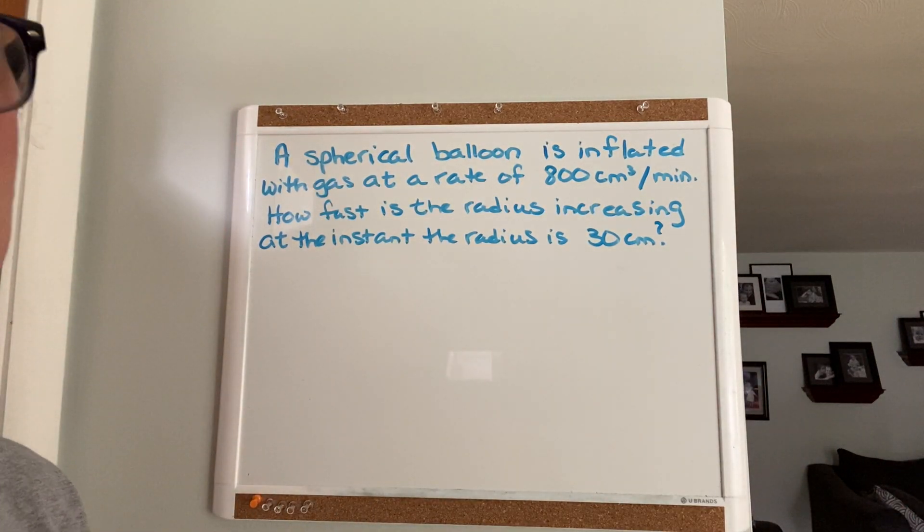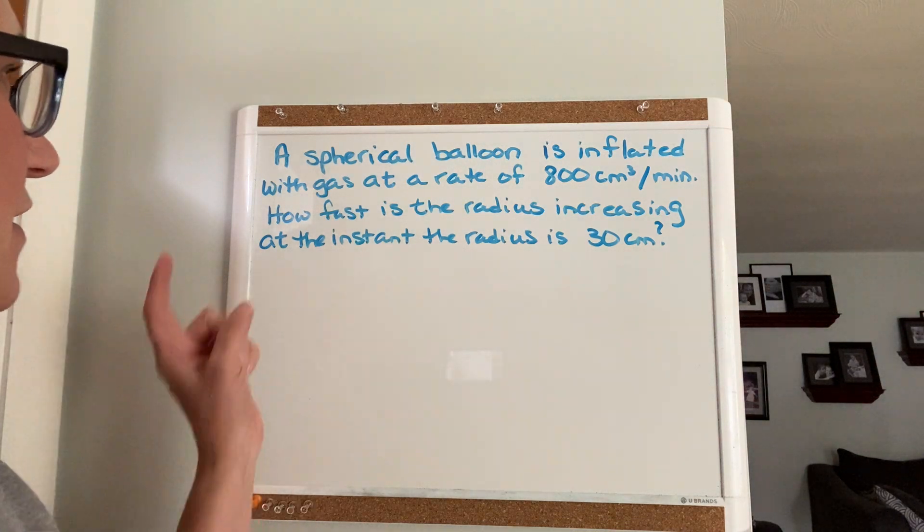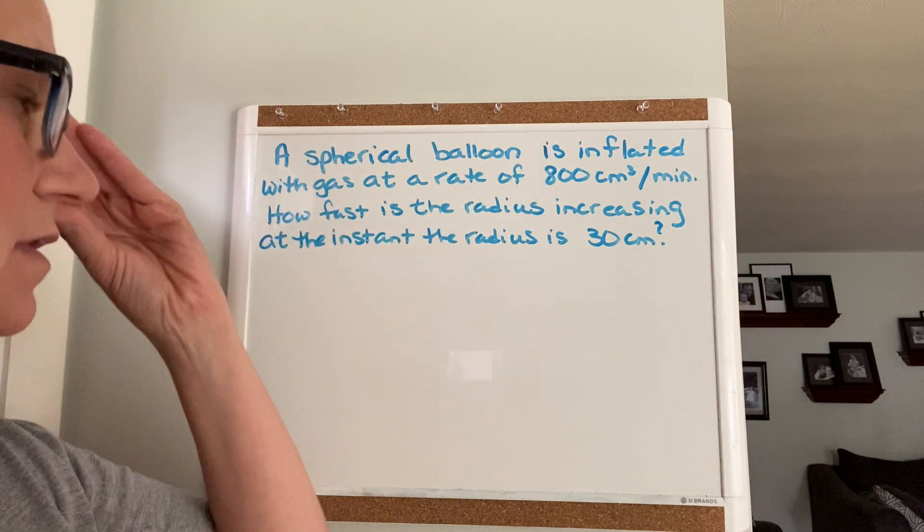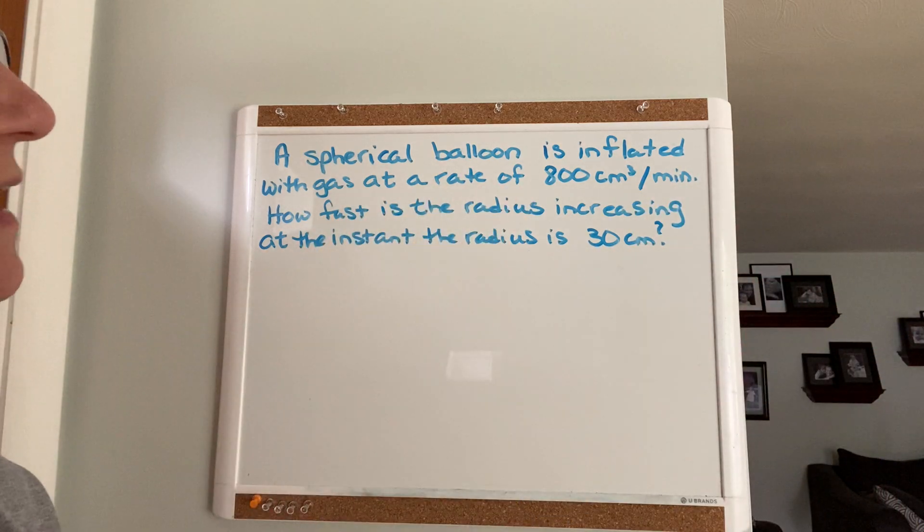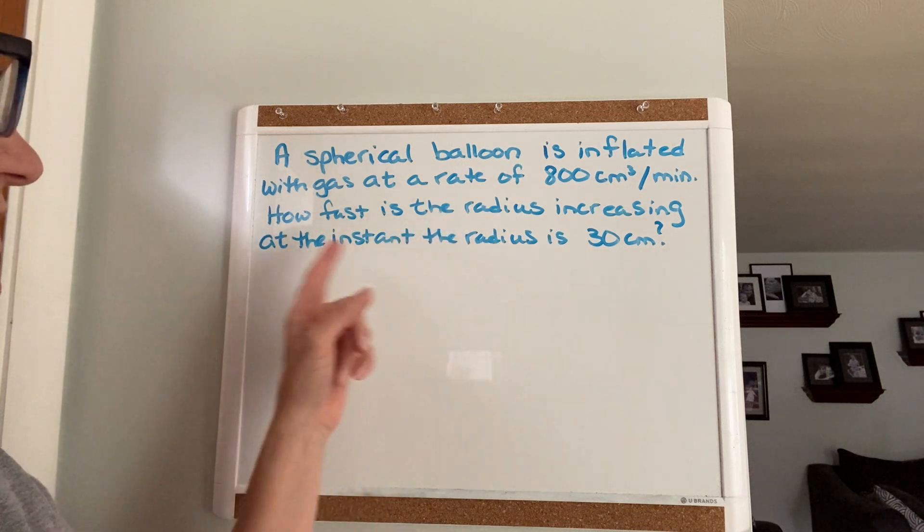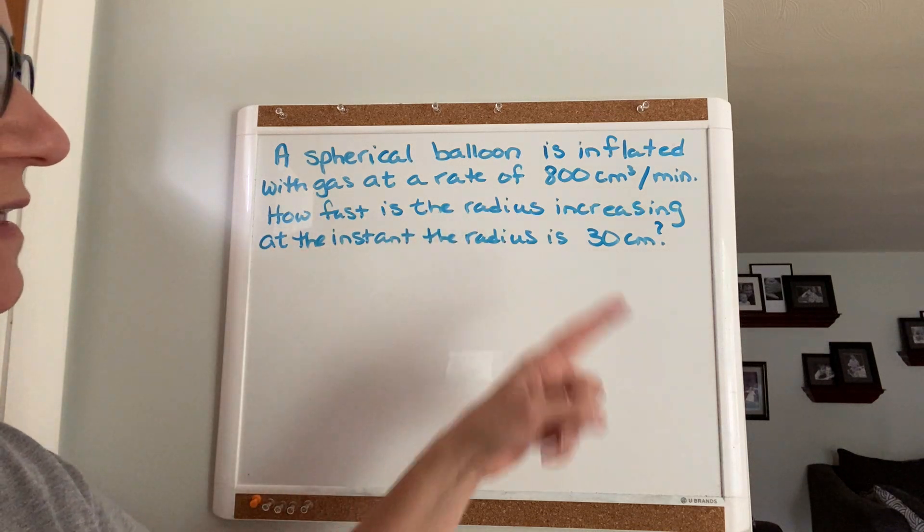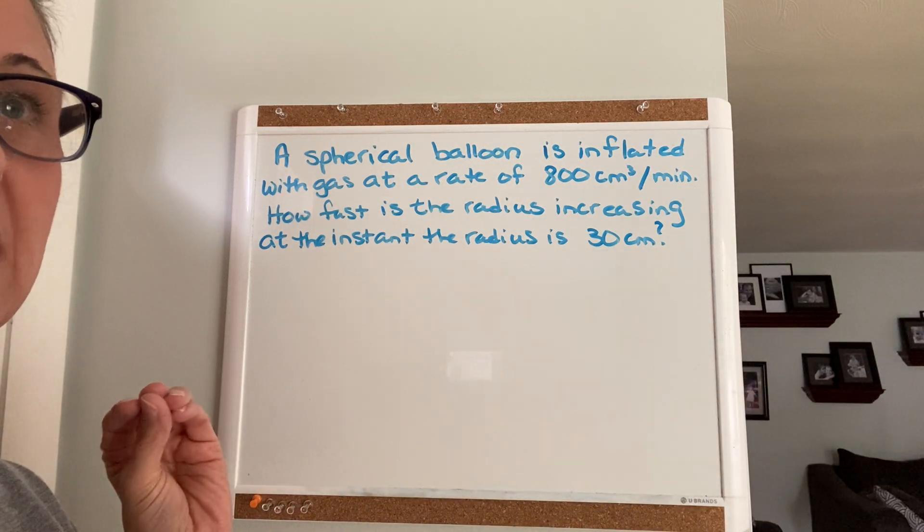Okay, here's your second word problem, second example for related rates. This time we have a spherical balloon that is being blown up at a rate of 800 cubic centimeters per minute. How fast is the radius increasing at the instant the radius is 30 centimeters? So they want the speed of the radius when it's at 30 centimeters.